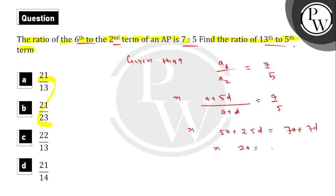This implies 2a is equal to 18d, that is equal to 9d. So a equals 9d. Now we need to find the value of a13 upon a5.